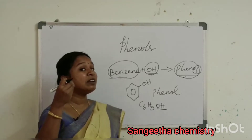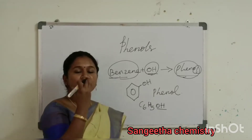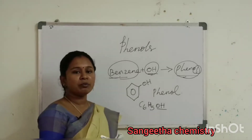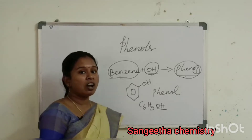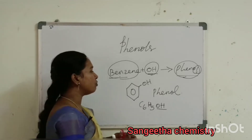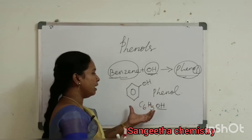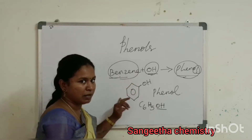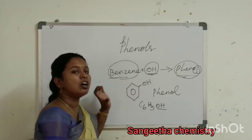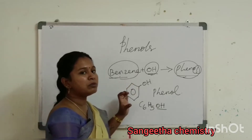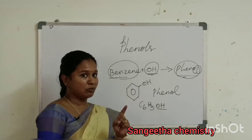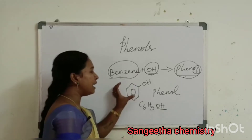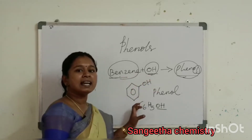You will get the structure of phenol — the aromatic ring. What are the aromatic compounds? You have to know. Benzene has the character of OH attached.